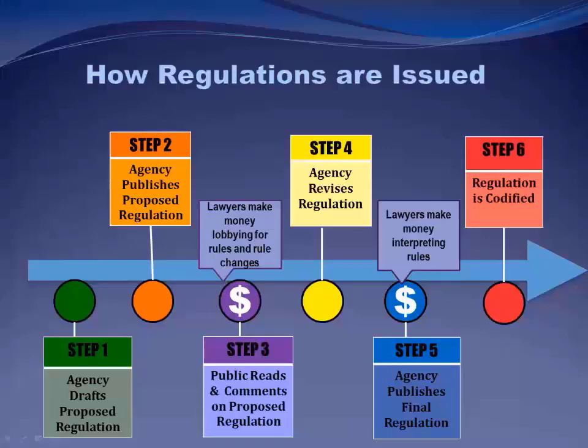Sometimes, but not always, agencies also hold hearings on the proposed rule at this stage — but they don't have to. They just have to give the public some way to express their views, whether through written comments or electronic comments submitted through regulations.gov. Step four: the agency reviews the comments received and may revise the rule. In the preamble of a final rule, they discuss the comments received, what they thought about them, and how they incorporated or declined to incorporate them. Step five: the agency prepares and publishes the final rule in the Federal Register.